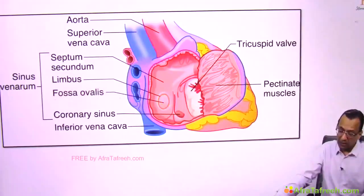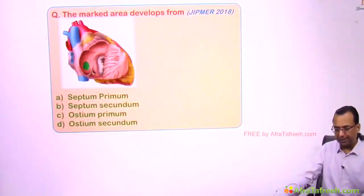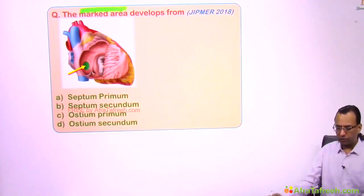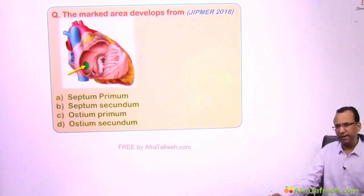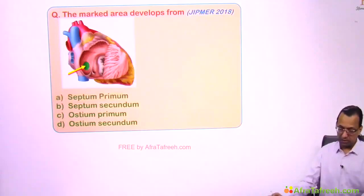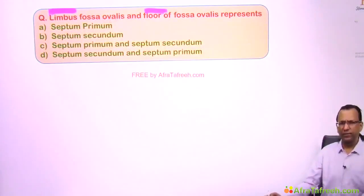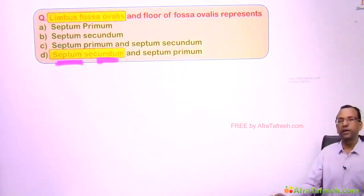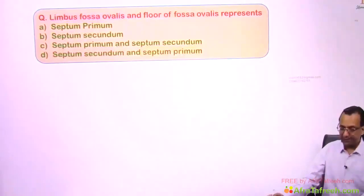Now let us look at the question we saw earlier. The question is asking about the marked area — fossa ovalis. The floor of fossa ovalis is the left septum, that is septum primum. Regarding the limbus fossa ovalis: limbus is seen from the right side, so it is on the right septum — septum secundum. Floor is septum primum, limbus is septum secundum. So the answer is choice number D.